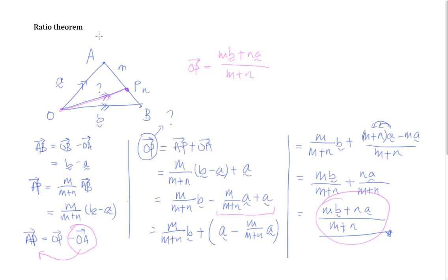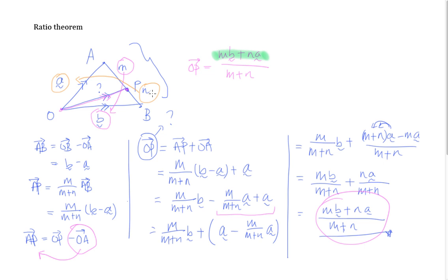How do we remember this formula? The setup is the ratio M to N. You take the M and multiply it by the vector opposite, which is B — giving MB. Then you take the N and multiply it by the vector opposite, which is A — giving NA. Add them together to get MB plus NA. Then divide by the total proportion, which is M plus N as the denominator. If you know this formula, you can apply it directly to find OP.